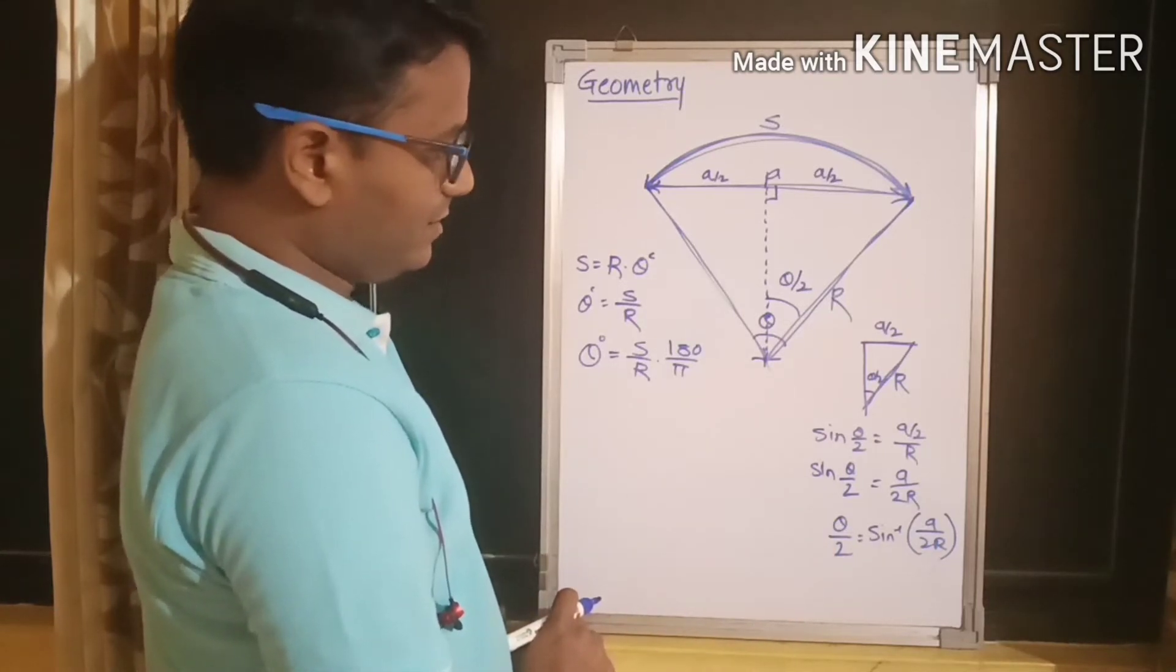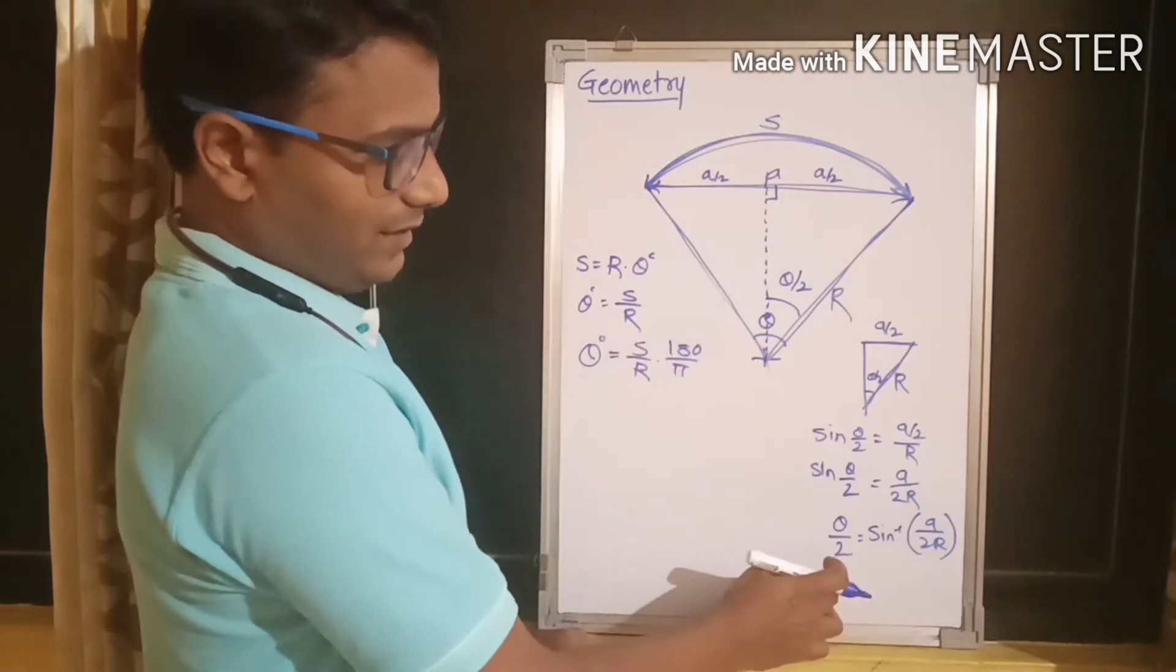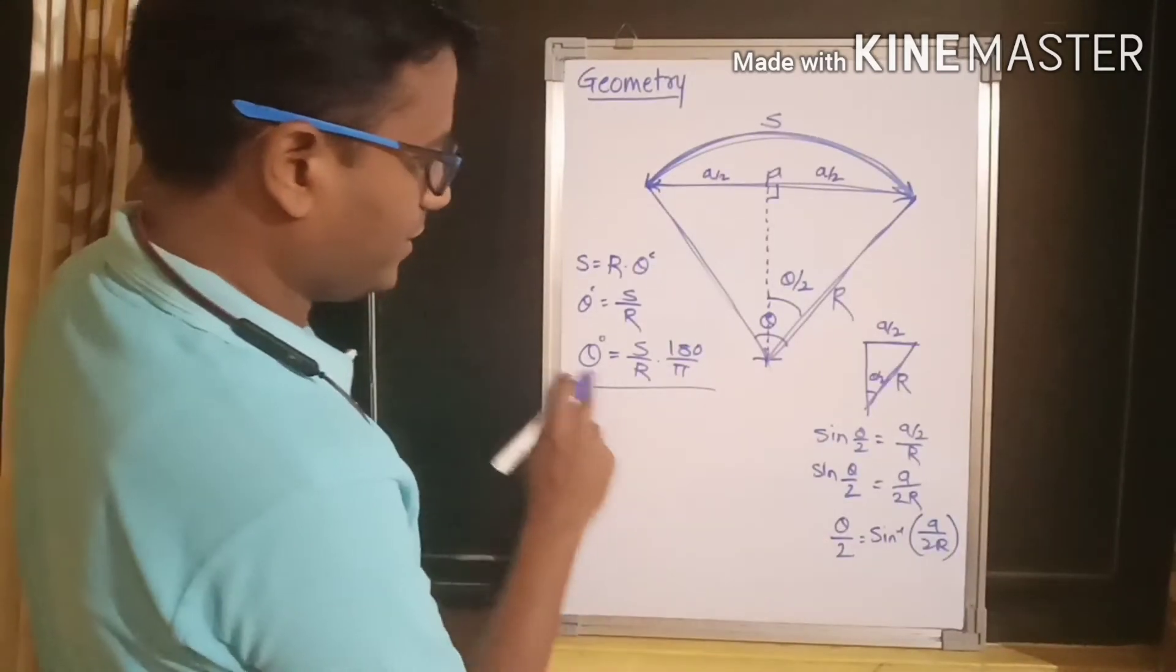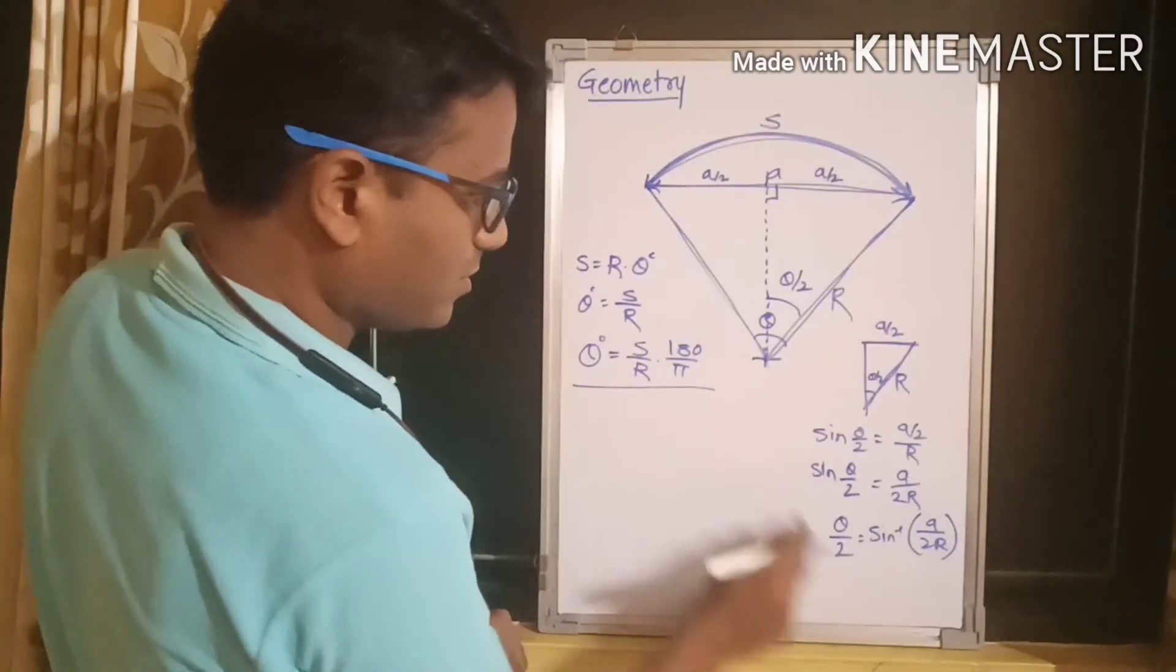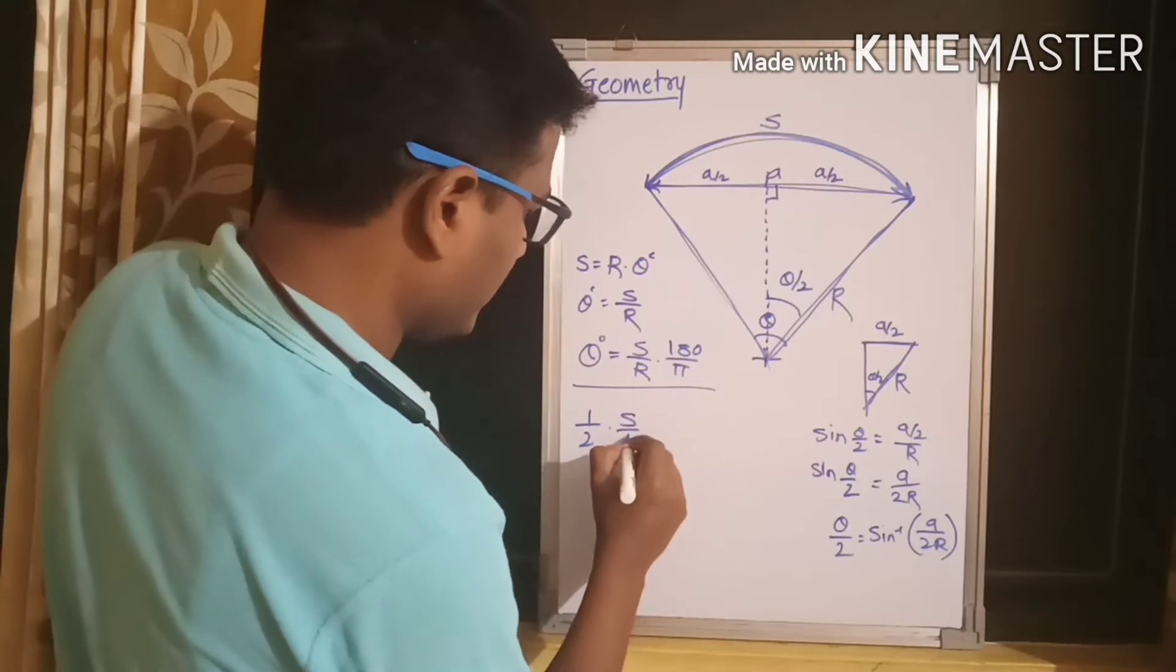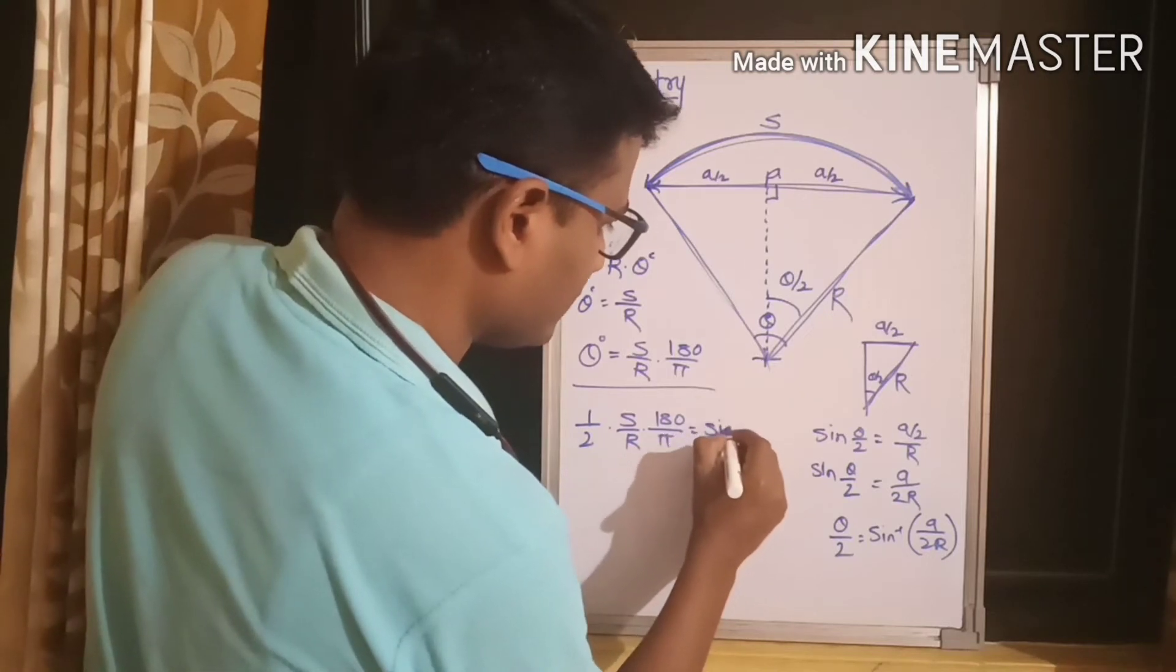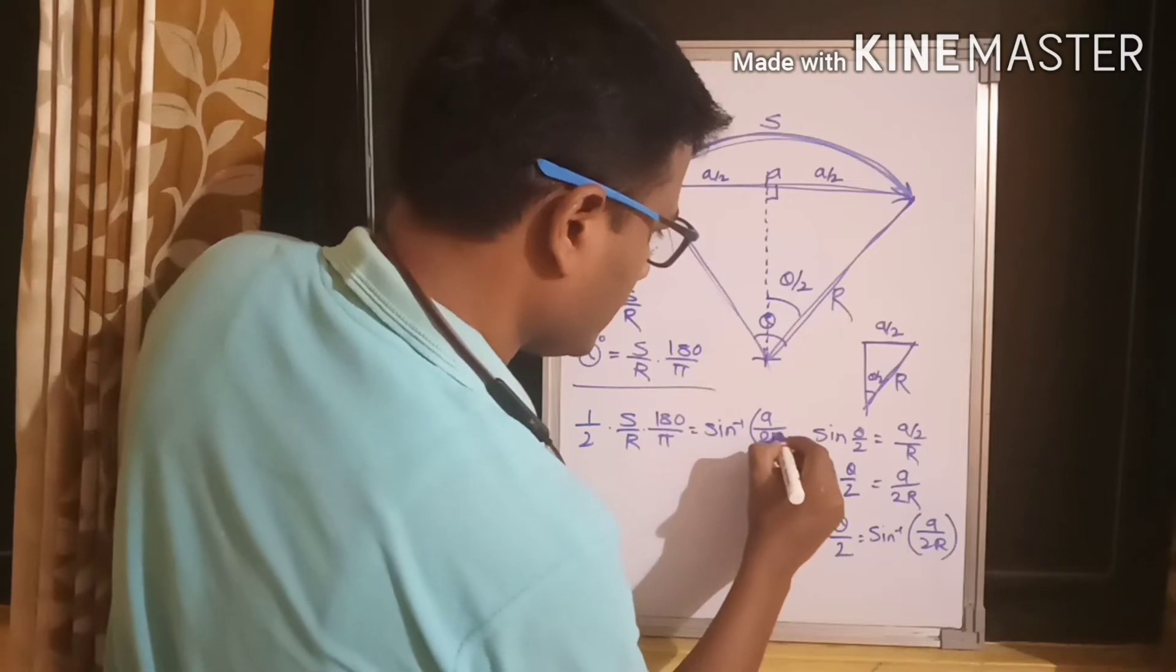We can see theta is common in these two equations. So, what we can do quickly is, I can substitute this theta value over here and let's see what happens. So, you take this equation over here and substitute this theta value over here. So, it becomes 1 by 2 on the other side, s by r, 180 by pi will be equal to sin inverse of a by 2r.